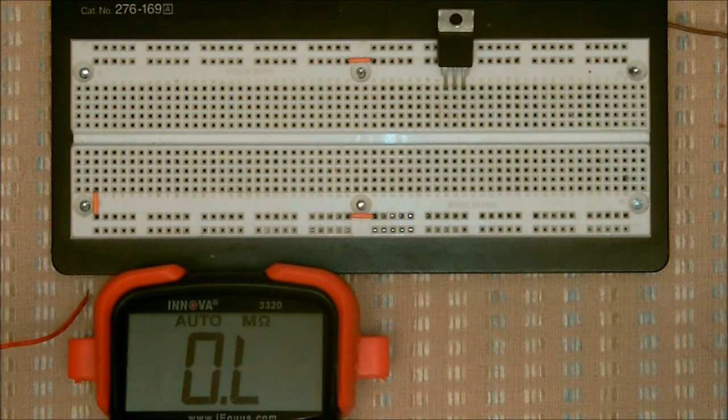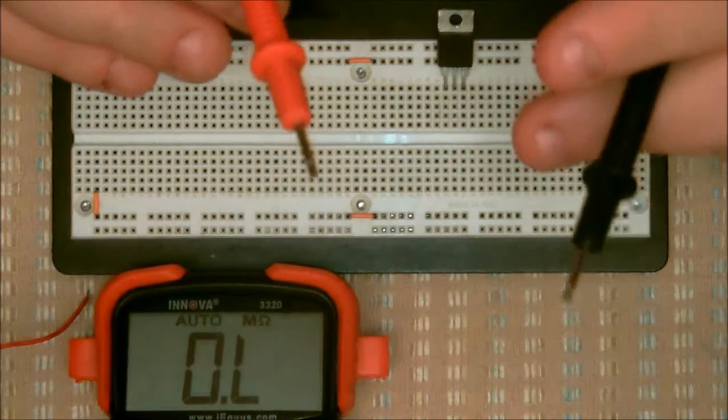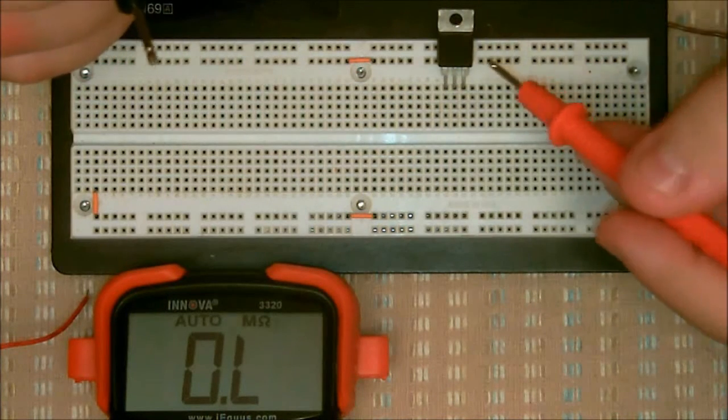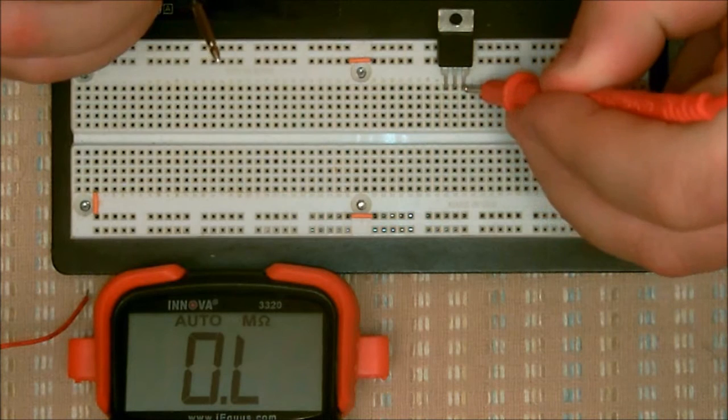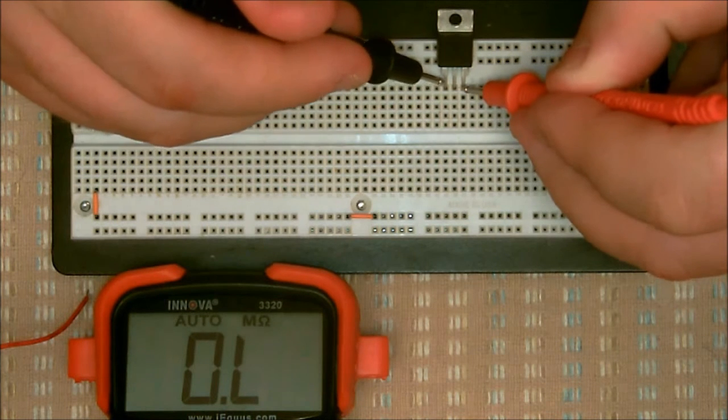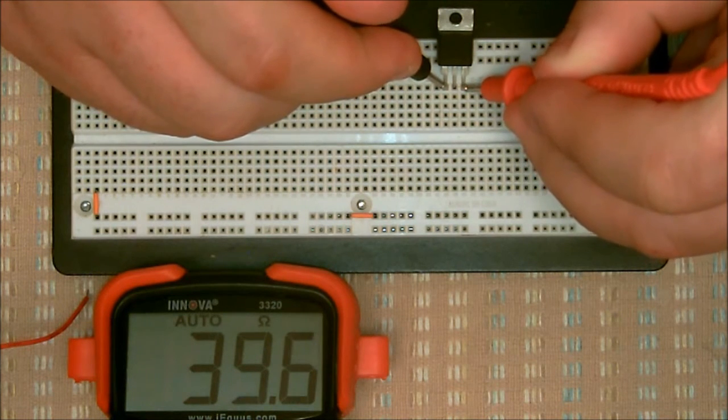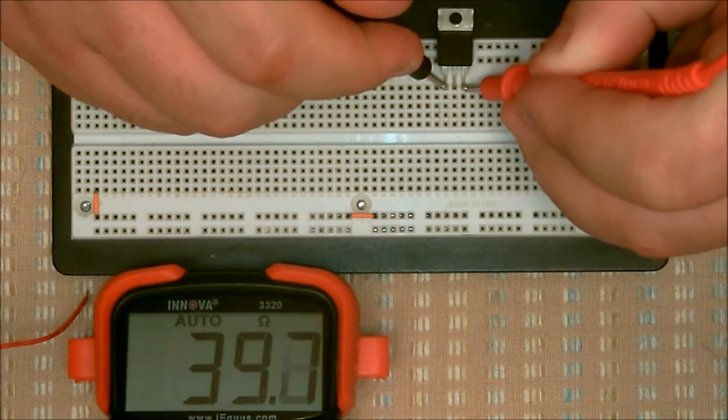With TRIACs, you can test them the same way with an ohmmeter. In some cases, it depends on the TRIAC and it depends on the meter. But not all ohmmeters will work on this. To demonstrate what you can test, to know that these are good, just get your positive and negative leads.